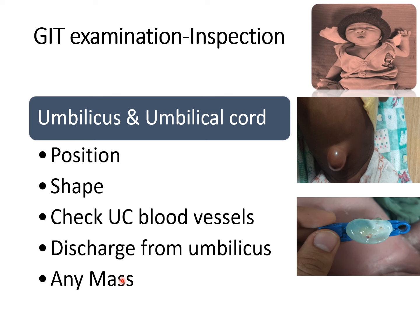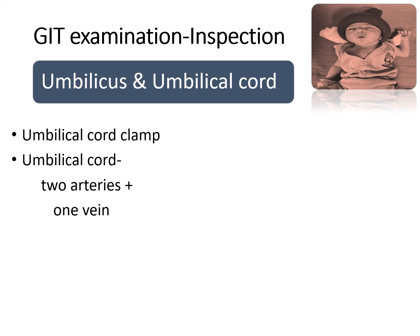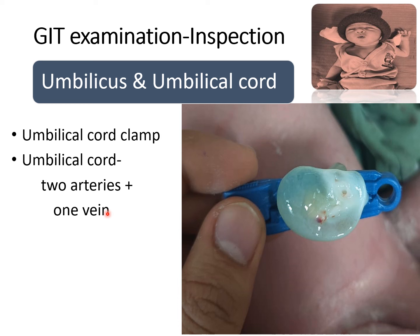Normally the umbilical cord contains two arteries and one vein. The basic difference between artery and vein: as you can see in this image, these two are the arteries — arteries are thick-walled, small-lumen structures, just like a protruded structure. While the vein is a thin-walled, collapsed, larger-lumen structure. Whenever you are inserting the umbilical venous catheter, you have to identify the vein before inserting. Normally the umbilical vein is positioned at the 12 o'clock position.